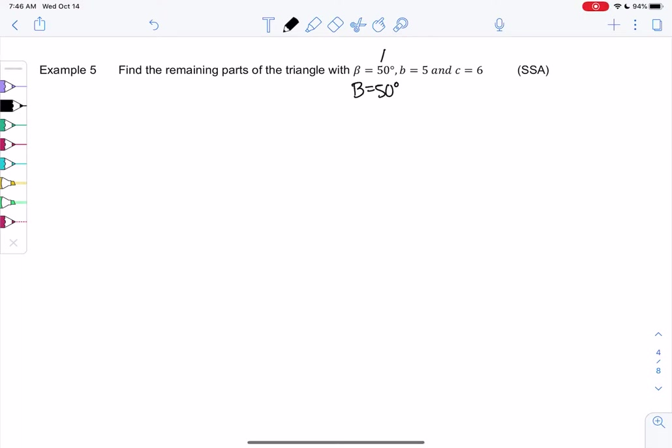And again, we have angle, side, side, or side, side, angle. This is when we use the ambiguous case.